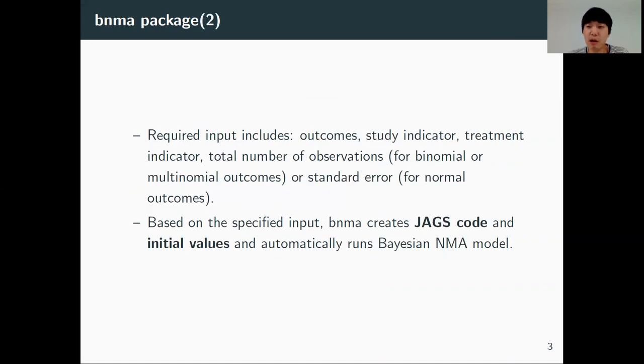Required input includes outcomes, study indicator, treatment indicator, and total number of observations or standard error. Based on the specified input, BNMA creates JAGS code and initial values and automatically runs Bayesian NMA model.